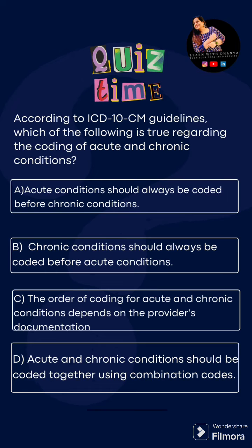For option A: acute condition should always be coded before chronic condition. B: chronic condition should always be coded before acute condition. C: the order of coding acute and chronic condition depends on the provided documentation. D: acute and chronic condition should be coded together using a combination code.